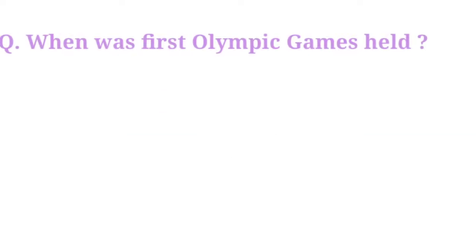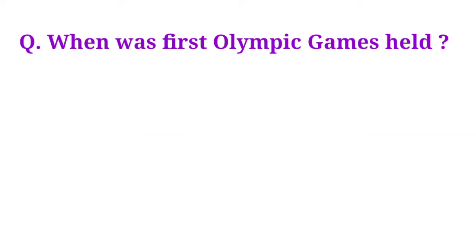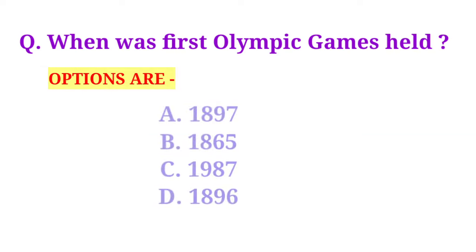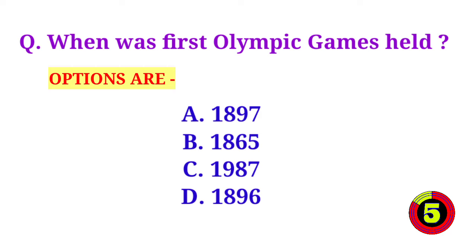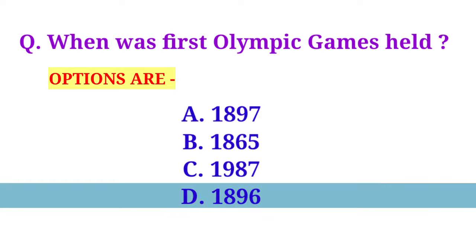When was the first Olympic Games held? Option D, 1896, is the correct answer.